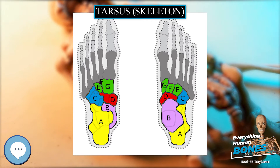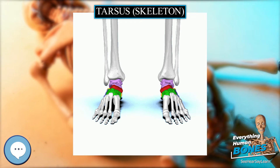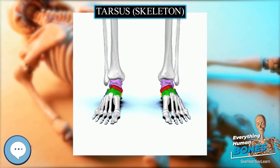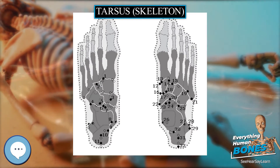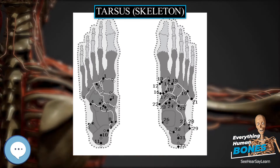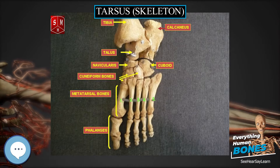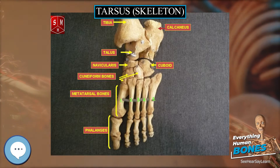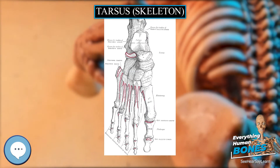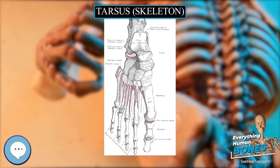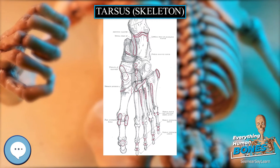Movements. The complex motion of the subtalar joint occurs in three planes and produces subtalar inversion and eversion. Along with the transverse tarsal joint — i.e., the talonavicular and calcaneocuboid joint — the subtalar joint transforms tibial rotation into forefoot supination and pronation. The axis of rotation in the joint is directed upward 42 degrees from the horizontal plane and 16 degrees medially from the midline of the foot.